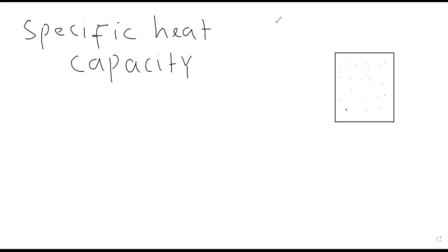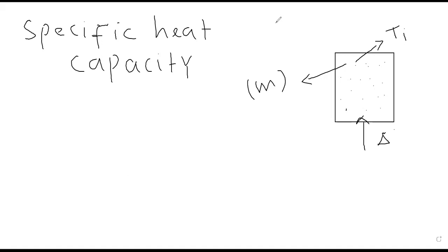Let us suppose the mass of a gas is represented by the symbol m. We don't know the exact mass of the gas — mass can be 10 kg, maybe 20 kg, or any value. We have to give an amount of heat to this state of matter. Delta Q is the amount of heat that is given to the gas, or simply we can say delta Q is the amount of heat absorbed by the gas.